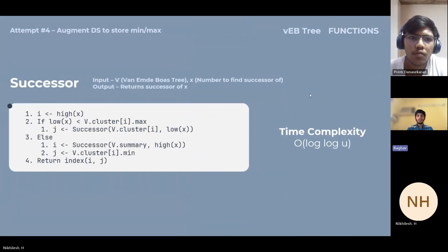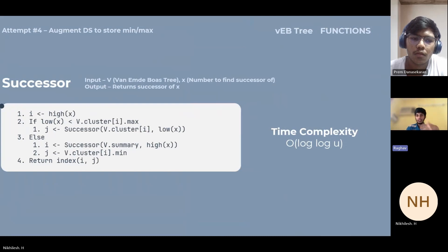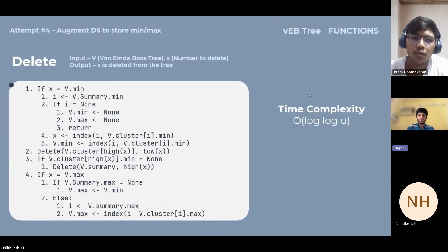The time complexity for this is O(log log u). When it comes to the successor part, you're first going to check if the number is less than the maximum value in that particular cluster. If it is, you're going to recursively search the cluster and return the index of the successor. Else, you go to the summary vector again and repeat the same process. The time complexity remains O(log log u).